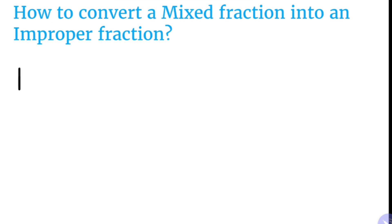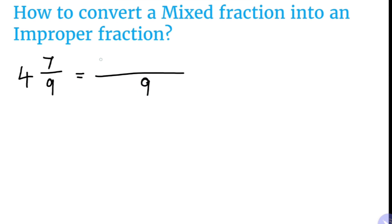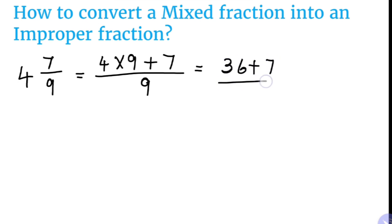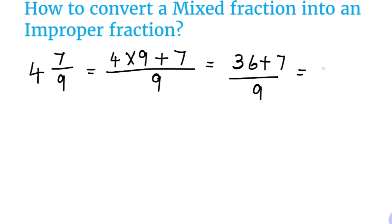Now let us take another example — 4 7/9. Again, the denominator will be the same. For the numerator, multiply the whole number with the denominator and add the numerator: 4 × 9 plus 7 becomes 36 plus 7 by 9, which equals 43 by 9.